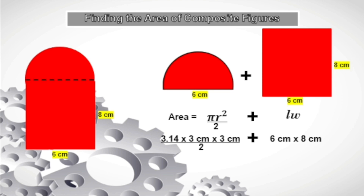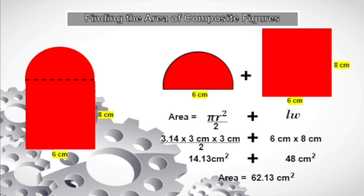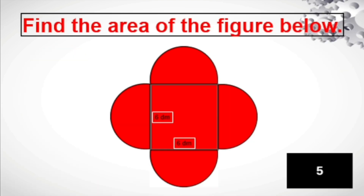Let us find the area of the semicircle: 3.14 times 3 centimeters times 3 centimeters equals 28.26 centimeters squared, divided by 2 gives 14.13 centimeters squared. The area of the rectangle is 6 centimeters times 8 centimeters, which equals 48 centimeters squared. To get the area of the figure, we add the two: 14.13 centimeters squared plus 48 centimeters squared gives an area of 62.13 centimeters squared.